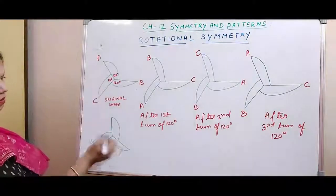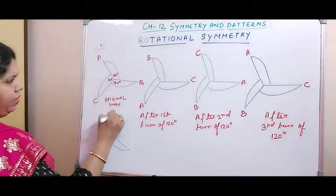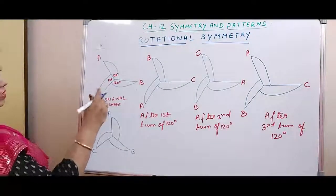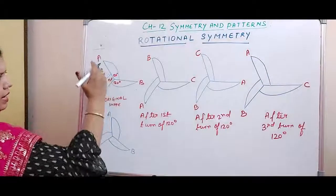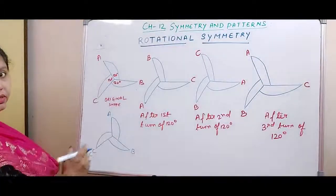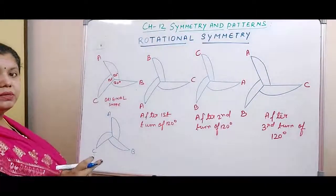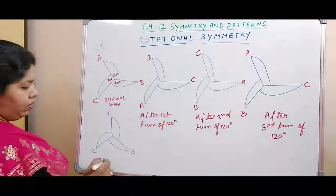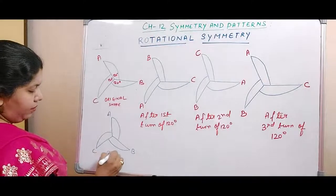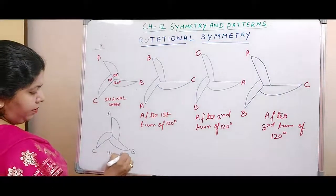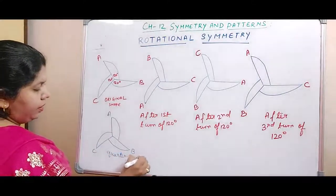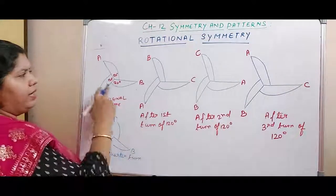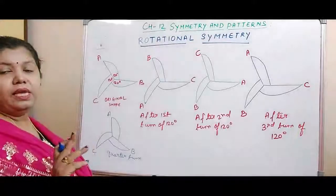Just look at the original shape — A, B, and C. It is not matching because the line is taking an angle here, whereas there it was straight, so it is not matching with the original form. This is your quarter turn. But at every 120 degrees you are getting the same shape, the same form.